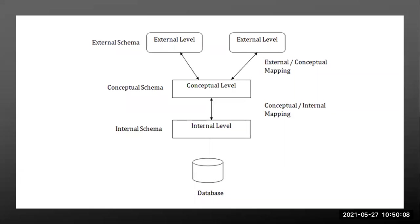Three levels are present: external level, conceptual level, and internal level, then the database. The first level — the highest level — is called the external schema or external level. The second is the conceptual schema or conceptual level — what data is stored and how it can be accessed. The third is the internal level — also called the low level — which is about how data is stored.